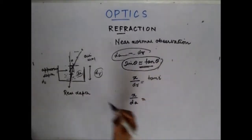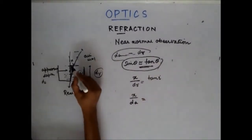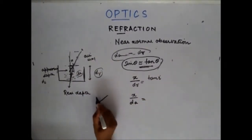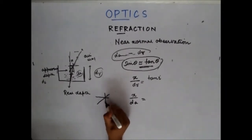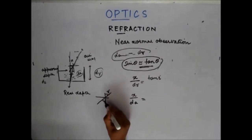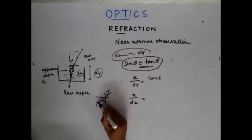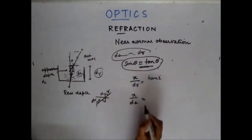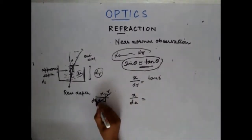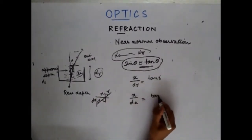What is x by dA? In this small triangle — I will magnify this — this angle is the refracted angle, so this angle is also the refracted angle. That means this angle is also r. This is x, this is dA. So x by dA is tan r.